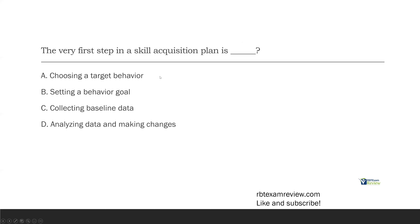Question five: the very first step in a skill acquisition plan is what? Don't overthink these questions. Consider what a skill acquisition plan consists of — we need a behavior or skill we're going to teach, we need a goal, we need data, and we need to analyze the data. Then we'll have intervention plans. So what is our first step? Is it choosing a target behavior, setting a goal, collecting baseline data, or analyzing data and making changes?